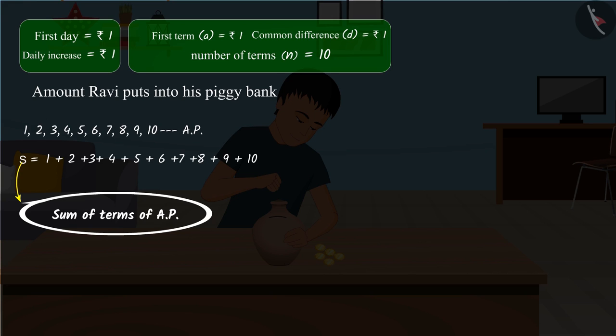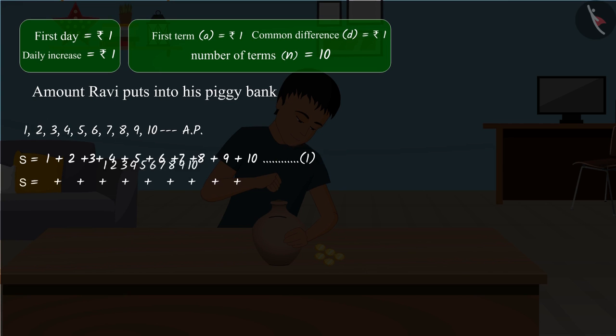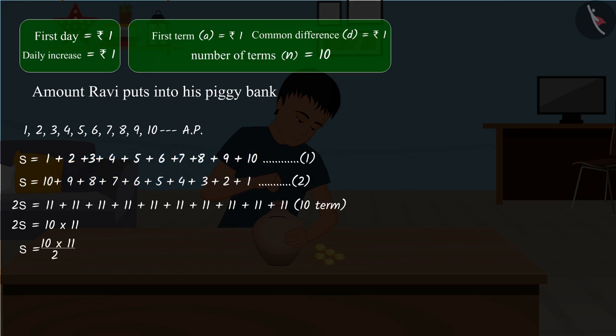We can denote it by equation 1. By writing the terms of equation 1 in reverse order, we get equation 2. The equations 1 and 2 represent identical values. By adding equation 1 and 2, we get S equals to 55.